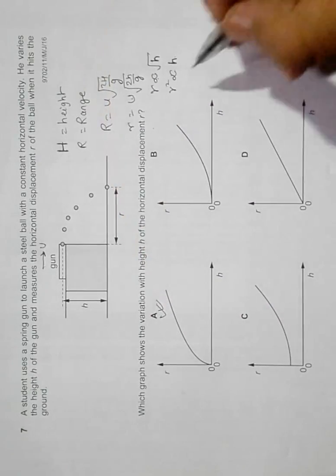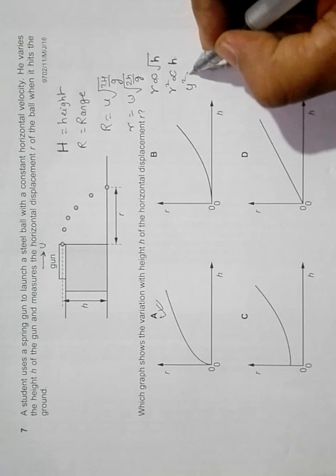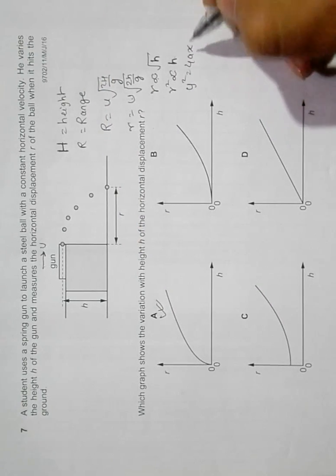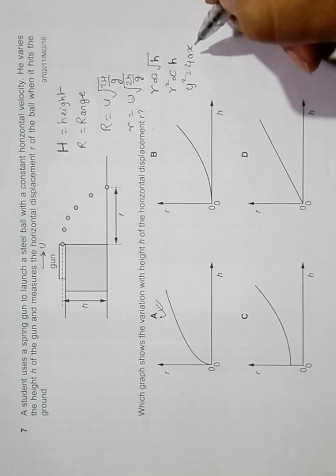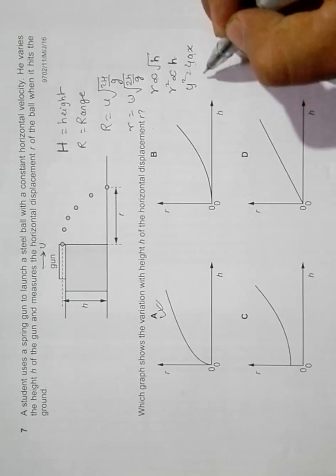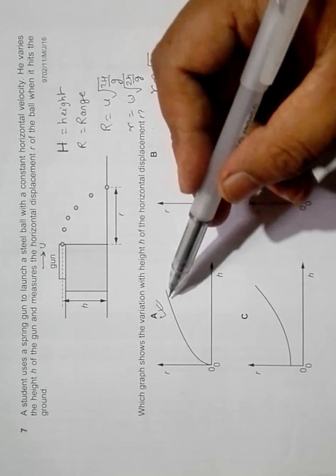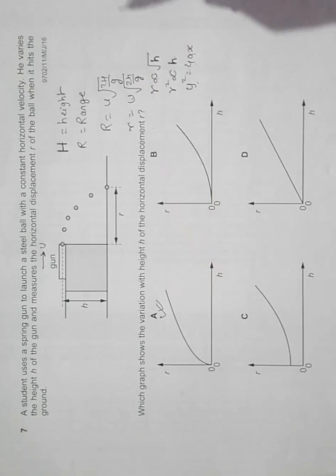Because it is like y squared equals 4ax, it's a parabolic equation. The graph is somewhat like this, which goes both ways. But here r cannot be negative, so it should be choice number A.